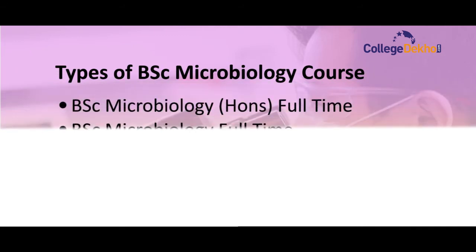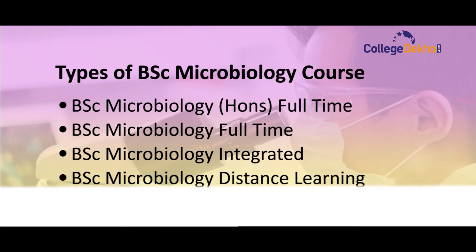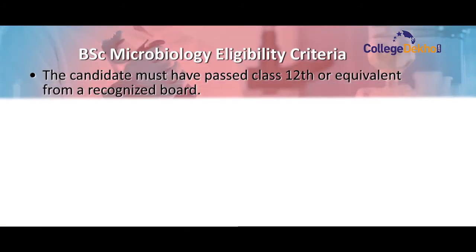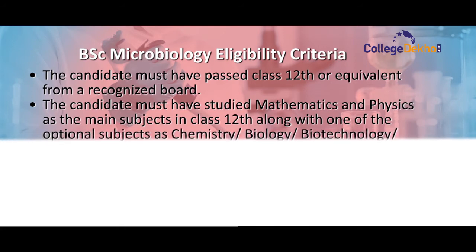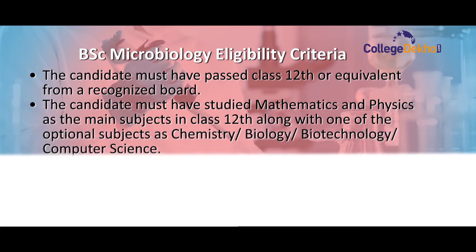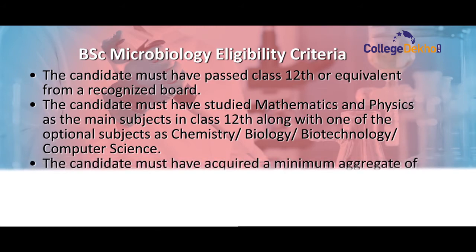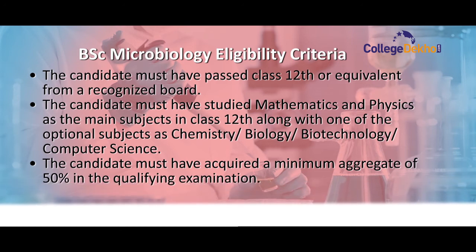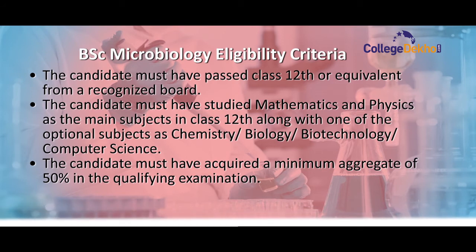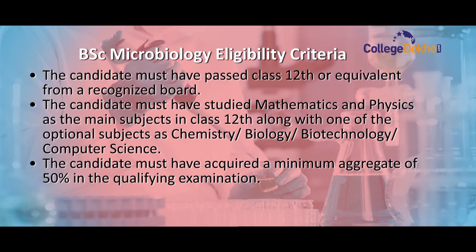Let's know about the types of BSc Microbiology course: BSc Microbiology Honours full-time, BSc Microbiology full-time, BSc Microbiology integrated, and BSc Microbiology distance learning. Now the eligibility criteria: candidates must have passed class 12th or equivalent from a recognized board, must have studied mathematics and physics as main subjects along with one optional subject such as chemistry, biology, biotechnology, or computer science, and must have acquired a minimum aggregate of 50% in the qualifying examination.